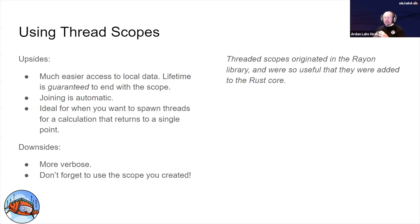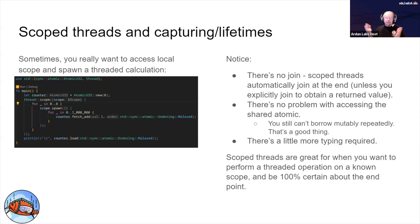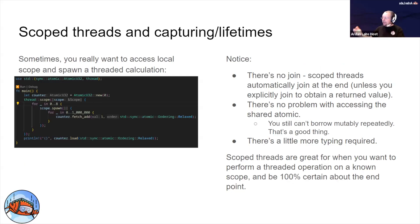Don't forget to use the scopes that you created. Threaded scopes originated in the Rayon library, which we'll talk about in a moment. With a threaded scope, you'll notice this is pretty much the same program — we've got our atomic counter just like before — but instead of spawning with std::thread, we're calling thread::scope. It passes you a closure which takes one parameter: the scope. When you spawn, you use scope::spawn, not thread::spawn, because you're telling that scope to spawn the thread within it.